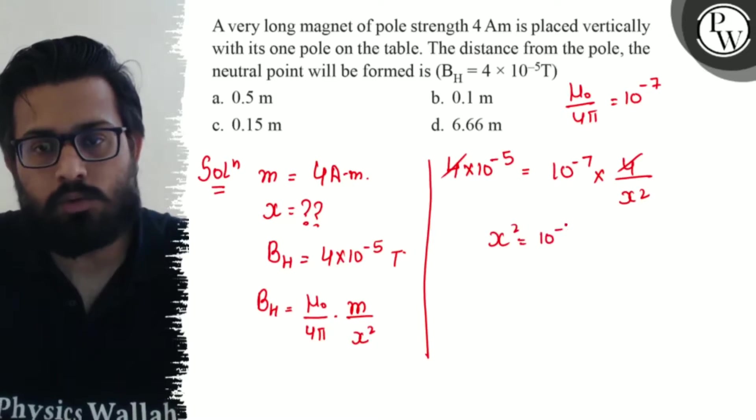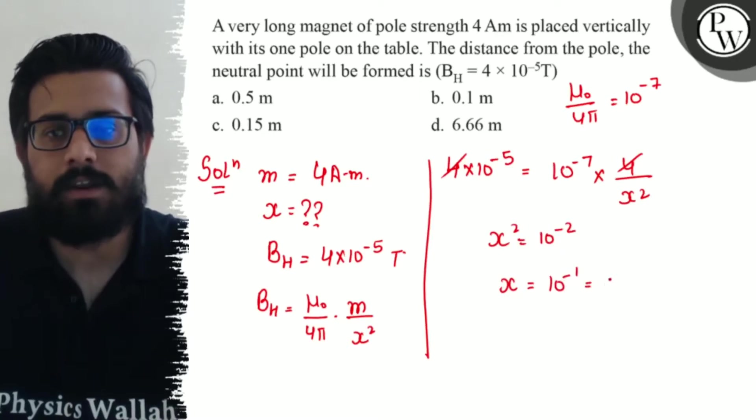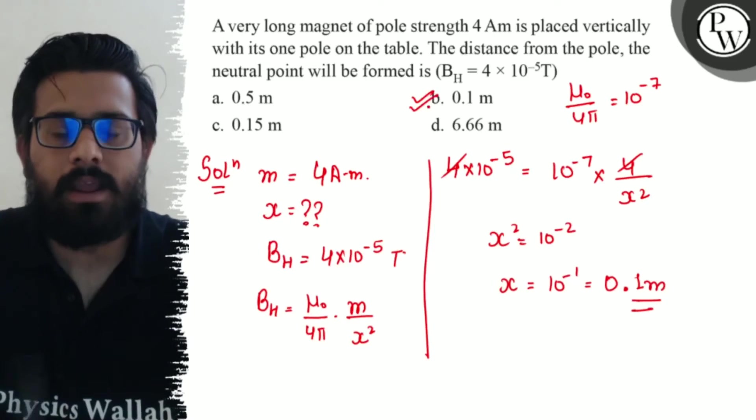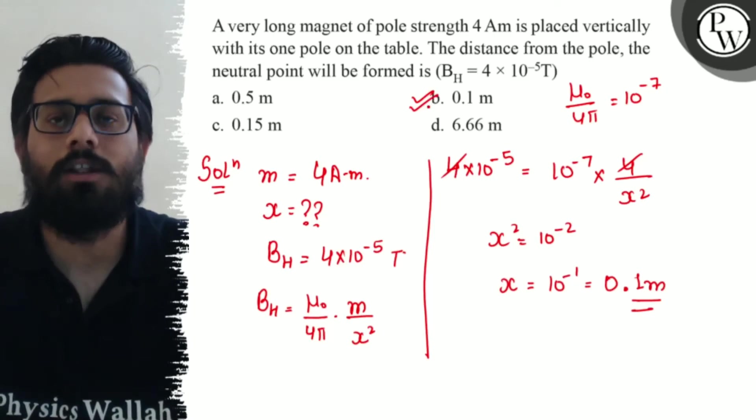Solving it, x = 10^-1, which can be written as 0.1 meter. So option B is absolutely correct. I hope you got the concept of this question. All the very best.